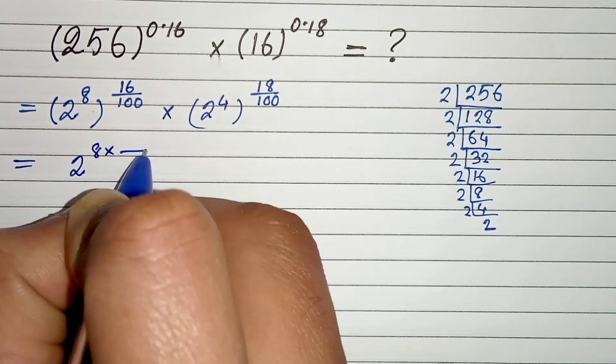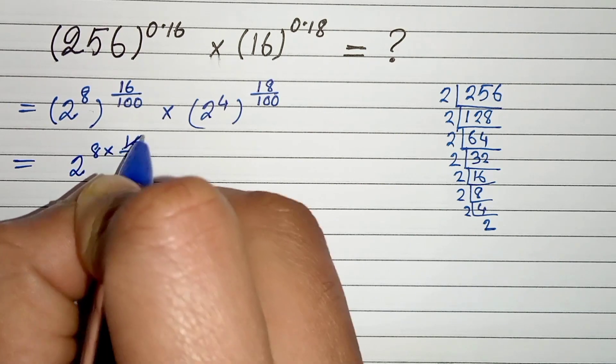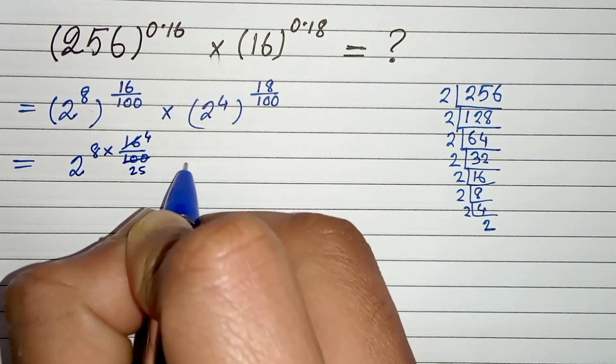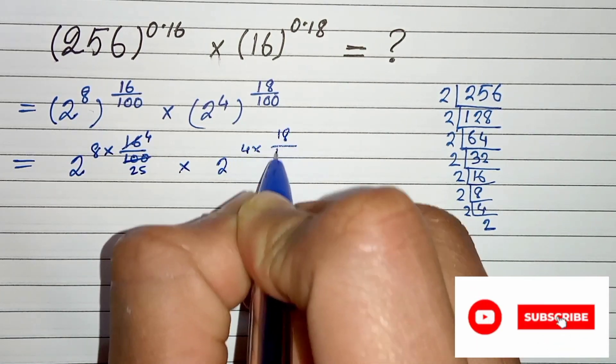In the next step we can write 2 to the power 8 times 16 by 100. 4 fours are 16, and here it will be 25, times 2 to the power 4 times 18 by 100.